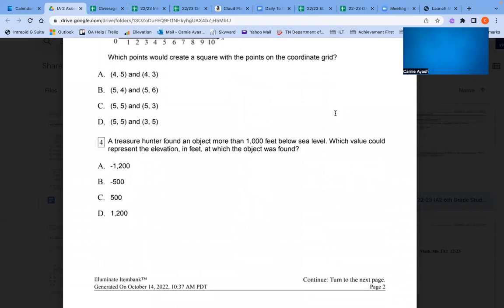Number 4: A treasure hunter found an object more than 1,000 feet below sea level. Which value could represent the elevation in feet at which the object was found?